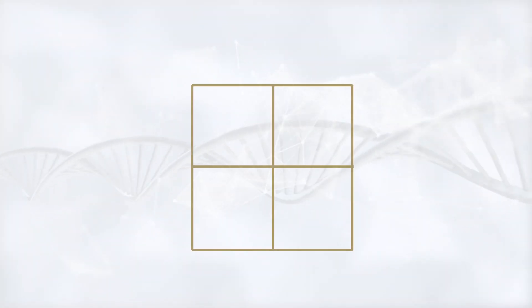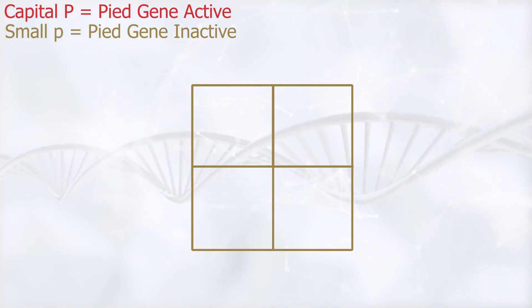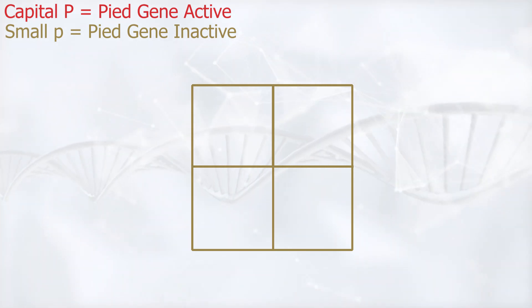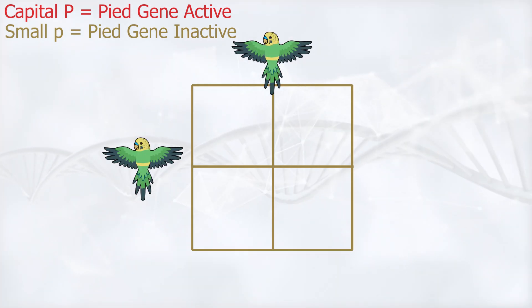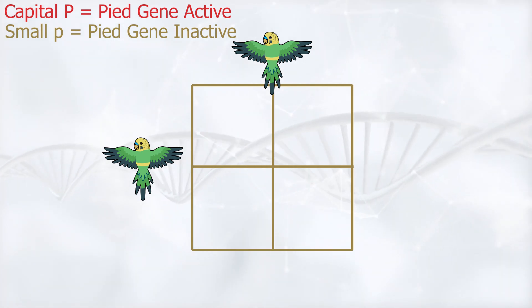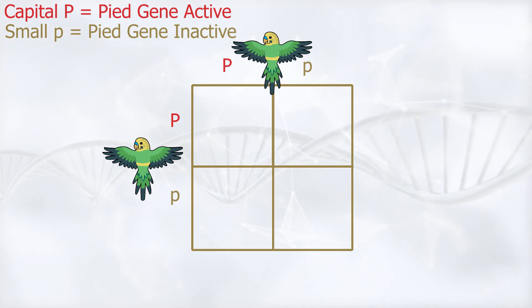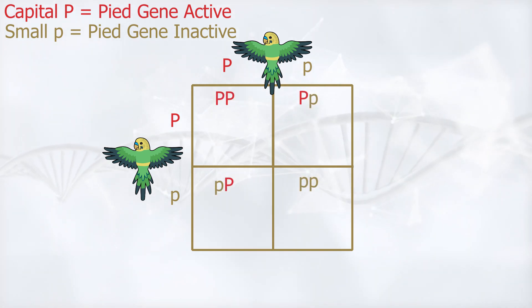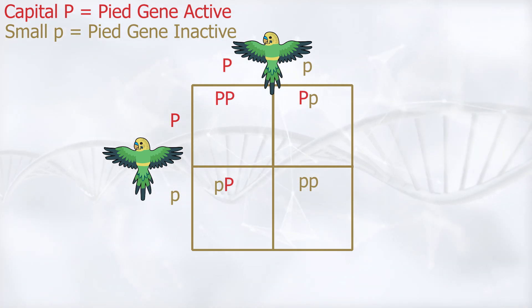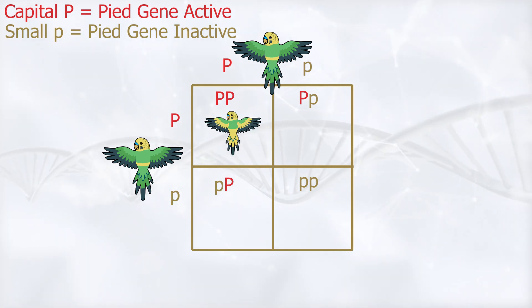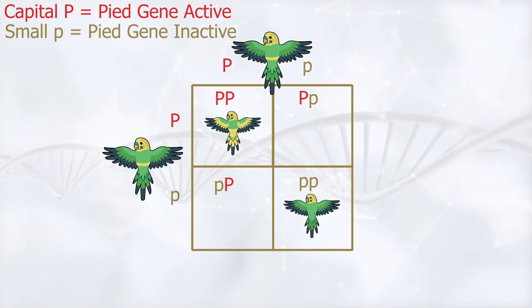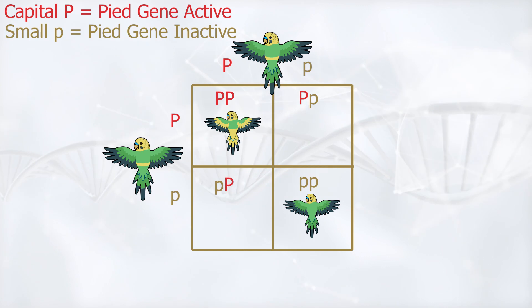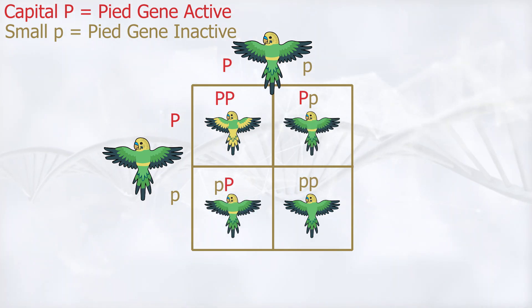Now let's dive into genetics. The easiest way to see all the different outcomes this gene can have is by putting two single factor dominant Pied parents into the Punnett Square. We can see that 25% of the children will be double factor dominant Pied, 25% will be normal budgies, and 50% will be single factor dominant Pied, just like their parents.